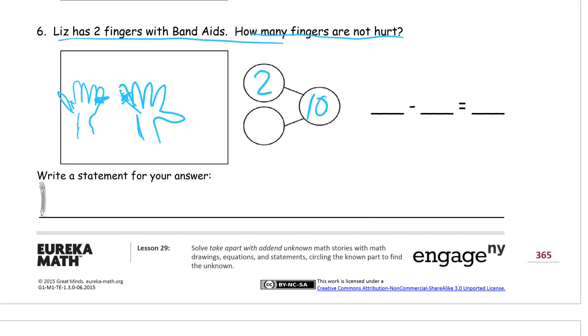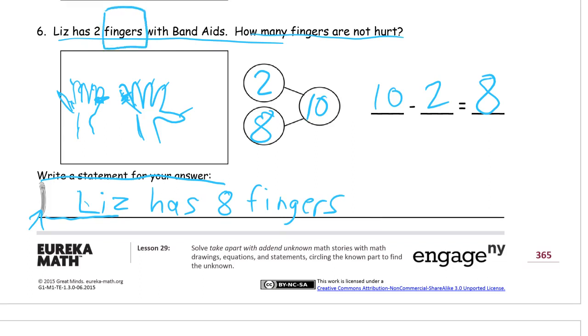We're taking ten apart: two fingers with band-aids and fingers without band-aids. There are eight fingers without band-aids. So the two parts of ten are the two we knew about. The unknown we had to count. Eight. And then we have to write our own statement for an answer. The words you need to write for your own answer statements are usually almost always in the sentence. There's the word fingers right there. Those words are almost always in the sentence, in the question. So Liz has eight fingers not hurt.